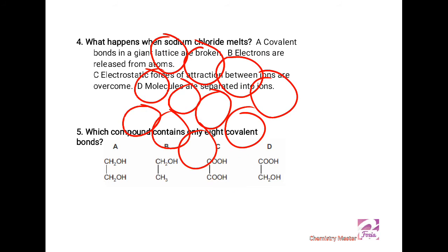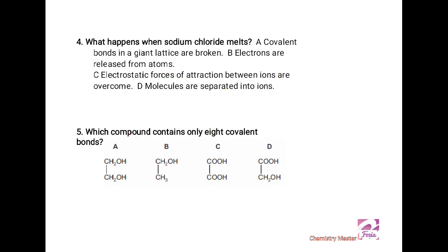Look what the options are. Option A: covalent bonds in a giant lattice are broken - the giant lattice is broken but not the covalent bonds, so option A is omitted. Option B: electrons are released from atoms - they are already in their ionic states, so B is also omitted. When we see D, it uses a wrong term which is not possible to explain ionic compounds, because ionic compounds do not exist in molecules. When we read option C: electrostatic force of attraction between ions are overcome - that seems the most sensible answer.